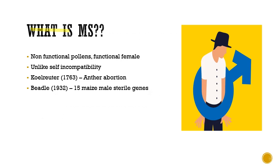What is male sterility? The term male sterility is mainly characterized by non-functional pollen grains along with a functional female part. This is unlike the self-incompatibility process, where the plant system produces functional pollen grains, whereas in a male sterile system we have non-functional pollen grains.